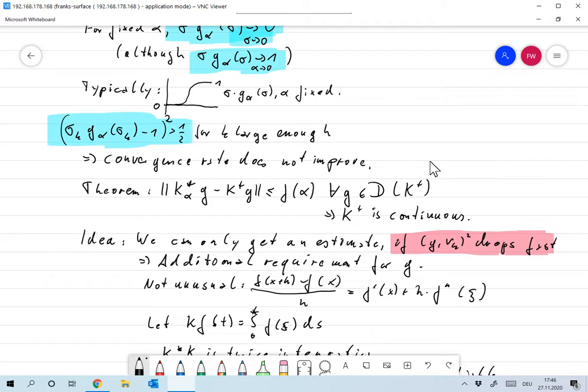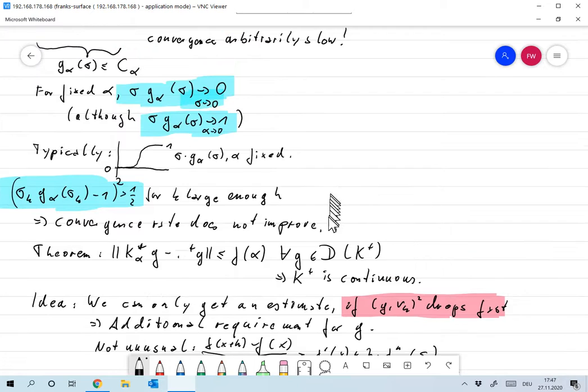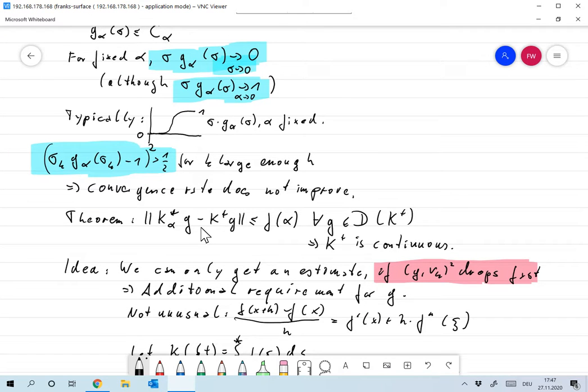There's even a theorem that says any error bound is impossible for, it's impossible to give an error bound for this type of operators, even independent of whether you use the singular value decomposition or not. So if you have an estimate of the following form, norm of K alpha plus G minus K plus G is smaller than F of alpha for all G, for all G in D of K plus, and of course that F of alpha goes to zero for alpha to zero, then you already find that K plus is continuous. So it's impossible to give any kind of convergence rate for this convergence.